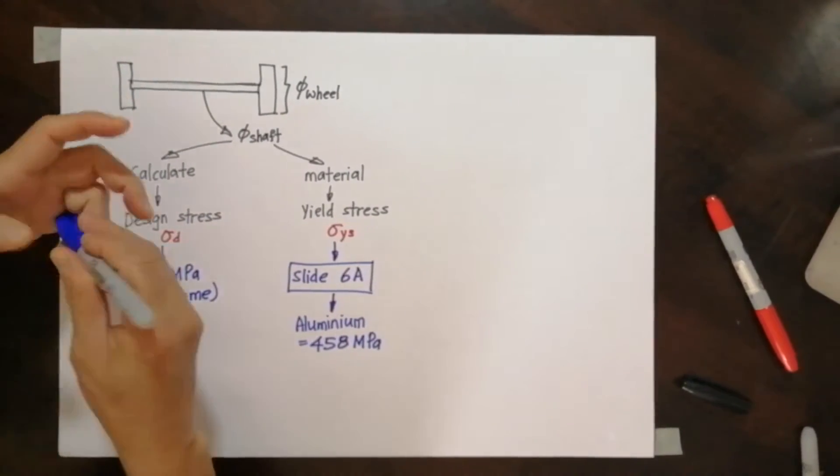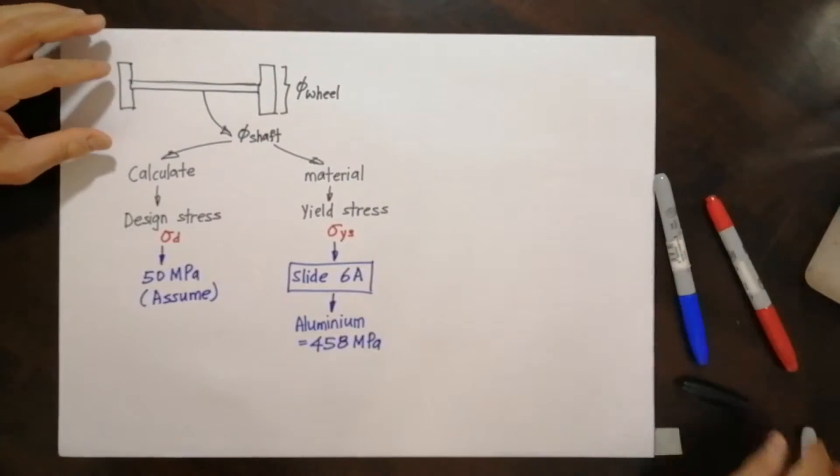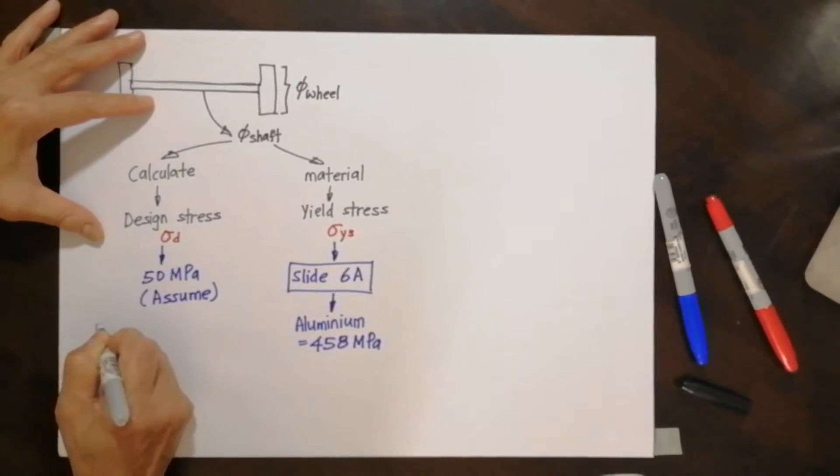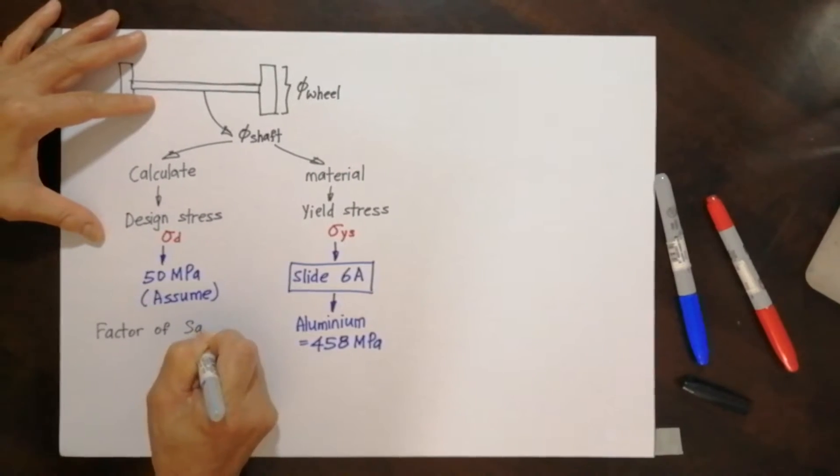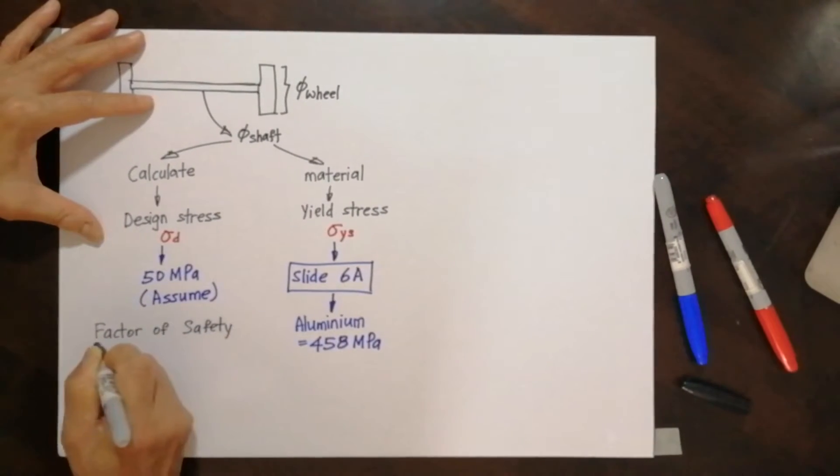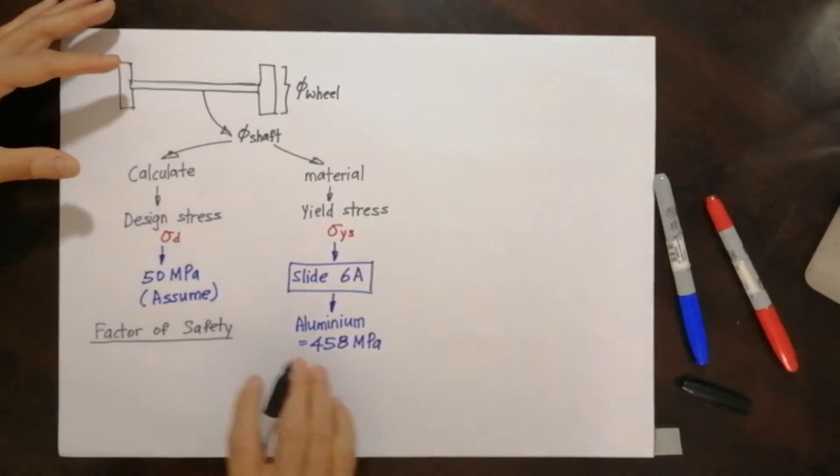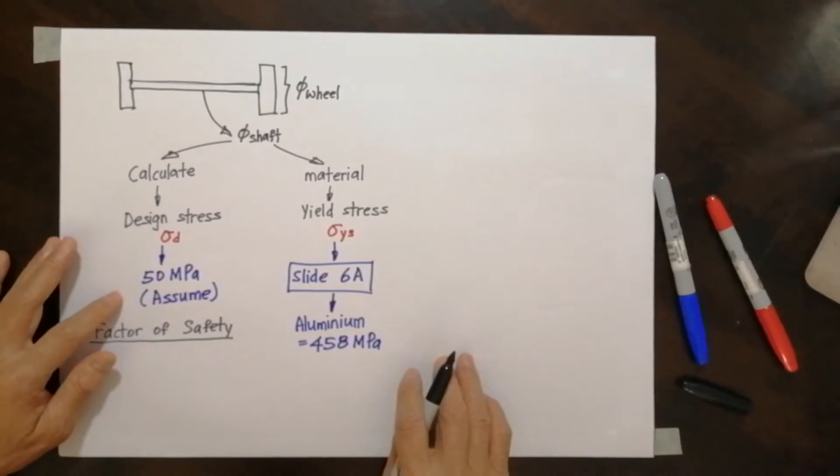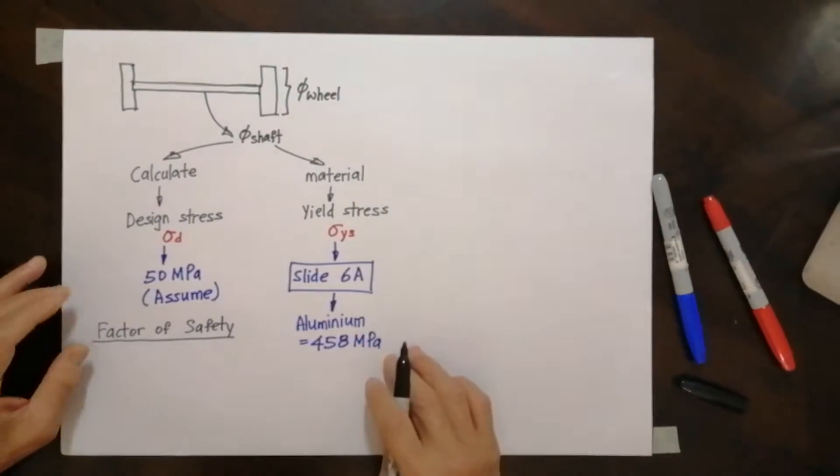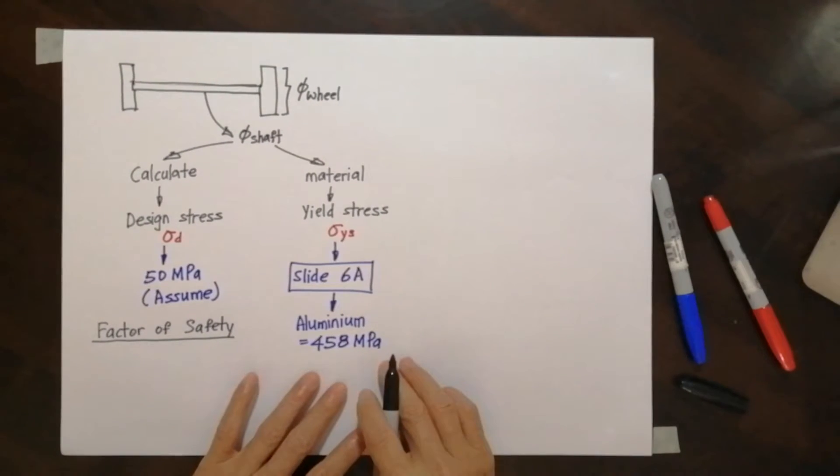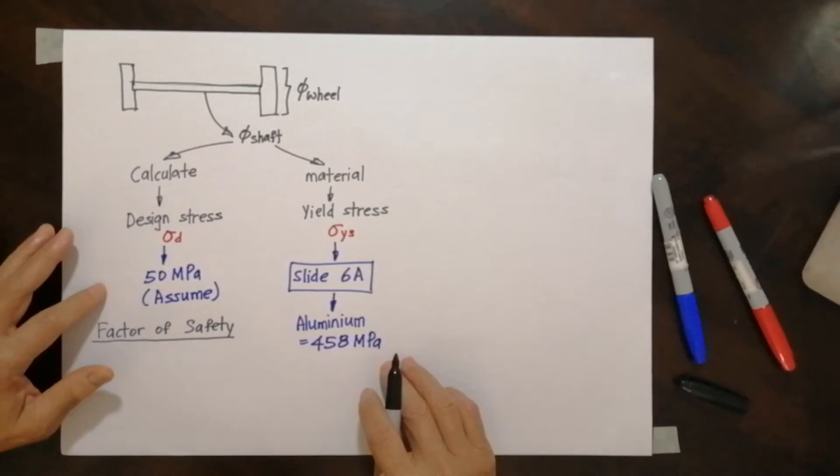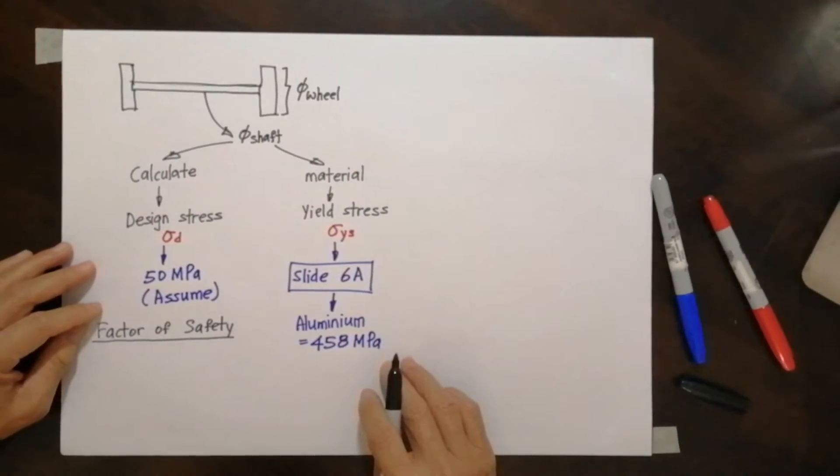So how are these two related? They are related by a term called factor of safety. Just think about it intuitively. This column is the design stress, which means what is required. This is the material, means what you have. So what you have must always be bigger than what you require, otherwise it will break.